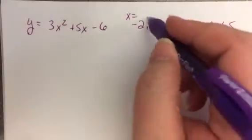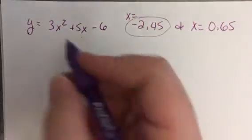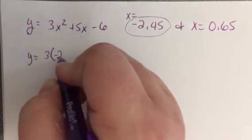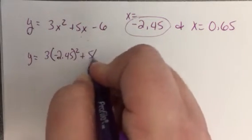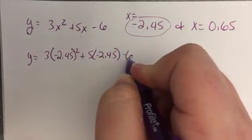So wherever we see an x, we're going to start by substituting in this negative 2.45. Okay, so we get y equals 3 times negative 2.45 squared plus 5 times negative 2.45 minus 6.